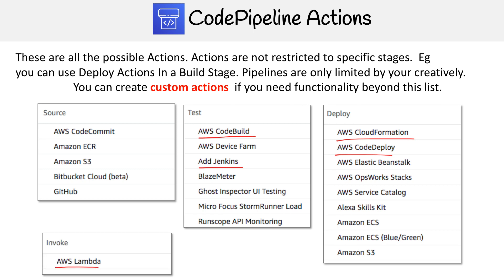The last code pipeline action is invoking a Lambda — very underappreciated and very useful action in the code pipeline process. There's a bit of overlap here because in Step Functions you can chain a lot of Lambdas together, or even with a single Lambda you can have a source-destination chain.